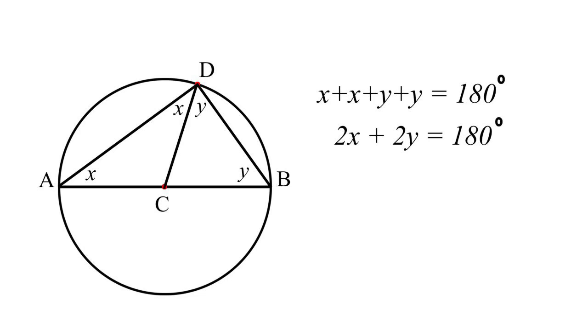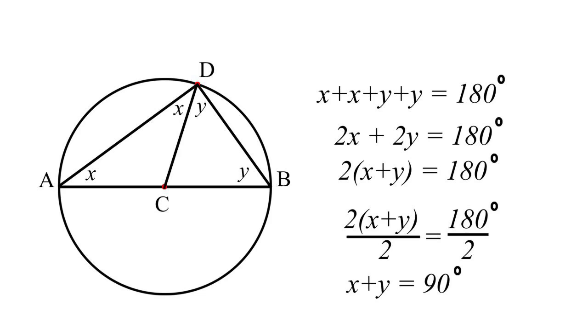I am going to restate this equation like this: 2 times X plus Y equals 180. Now dividing both sides by 2 leaves us with this. X plus Y equals 90 degrees.